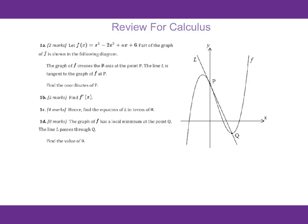This video is about review for calculus. Problem 1a: Let f of x equals x cubed minus 2x squared plus 8x plus 6. Part of the graph of f is shown in the following diagram. The graph of f crosses the y-axis at the point P. The line L is the tangent to the graph of f at P. Find the coordinates of P.